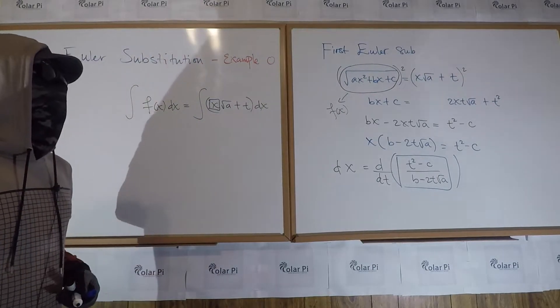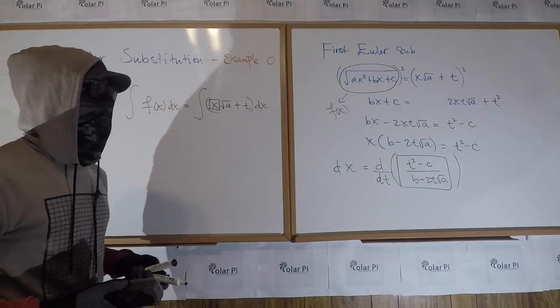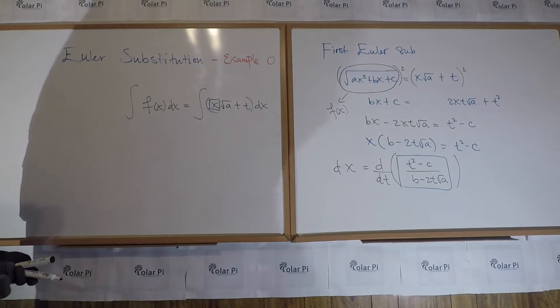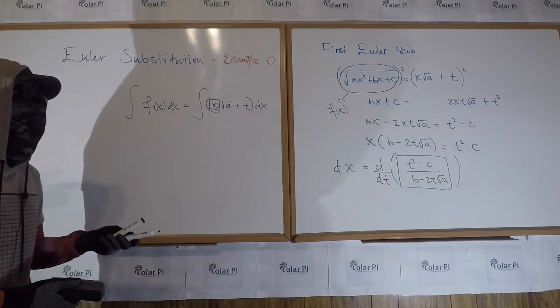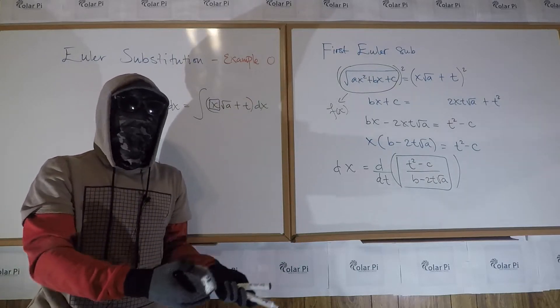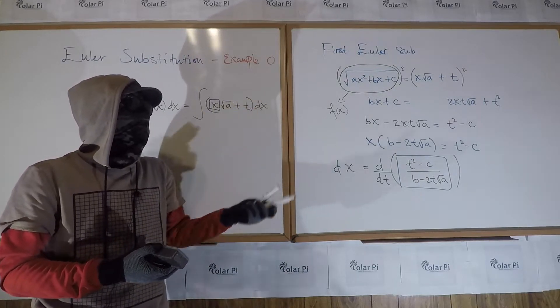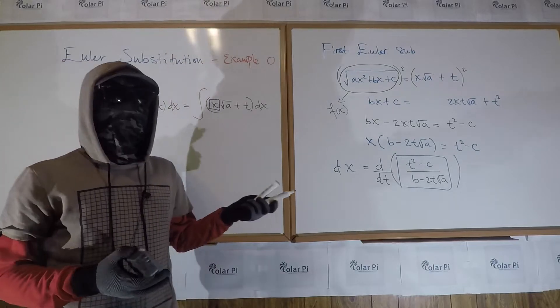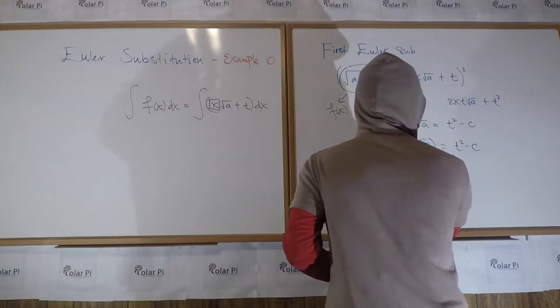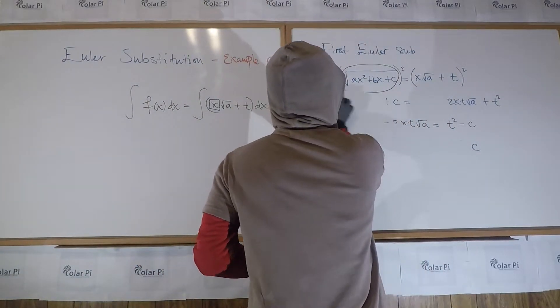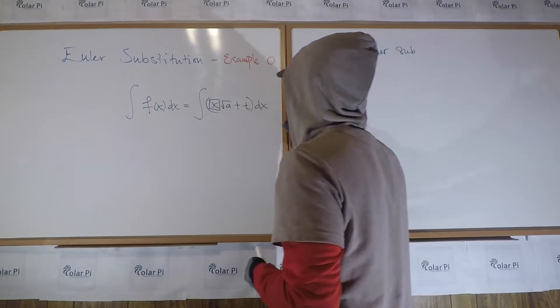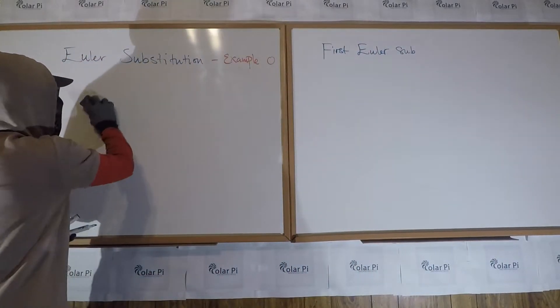So the other substitutions, the mechanics is slightly different, and obviously the algebra, right? But what purpose it serves is still the same, which is, in the end, it's to turn the integral from x to t, or whatever other variable you choose to use in place of what I've called t. And more importantly, to get rid of the square root. So, the goal with the other substitutions is the same, it's just that the other substitutions involve slightly different assumptions. Because here, what we assumed is that a is greater than zero.